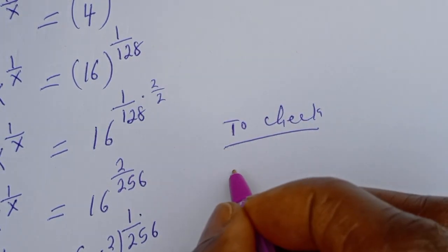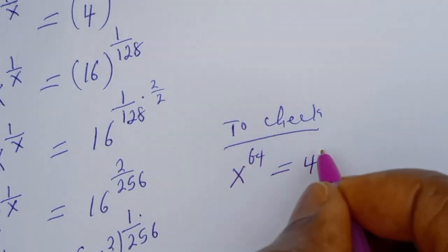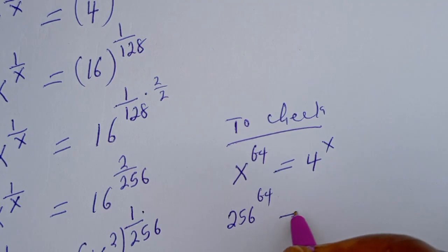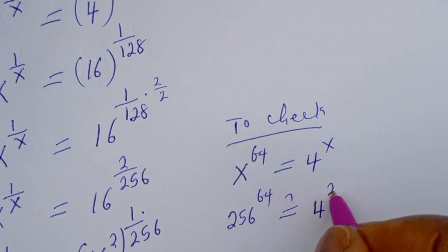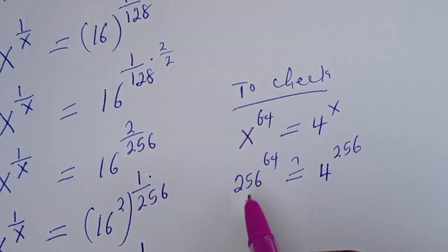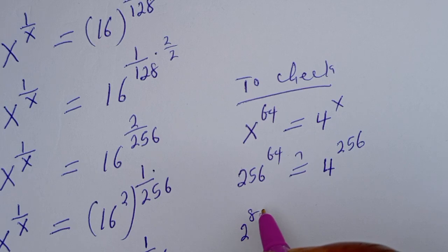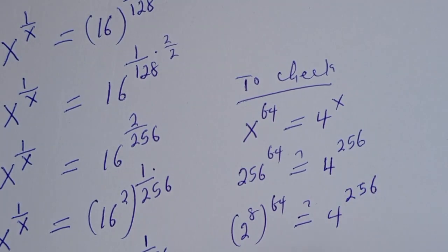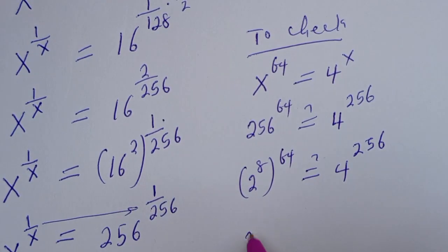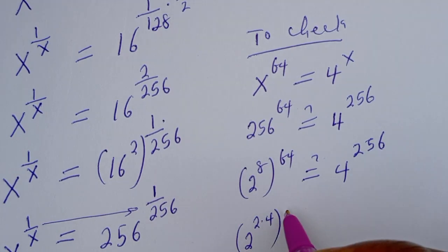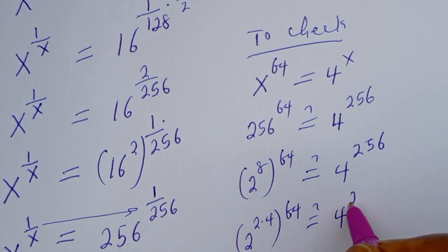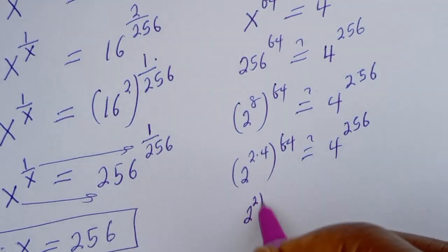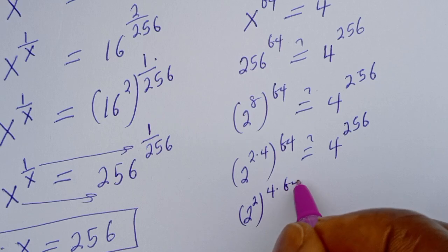To check: we have the given equation s to the power of 64 is equal to 4 to the power of s. Substituting s = 256, we need 256 to the power of 64 to equal 4 to the power of 256. This can be written as 2 to the power of 8, raised to the power of 64, must equal 4 to the power of 256. That is 2 to the power of 2, multiplied by 4 to the power of 64, must equal 4 to the power of 256.